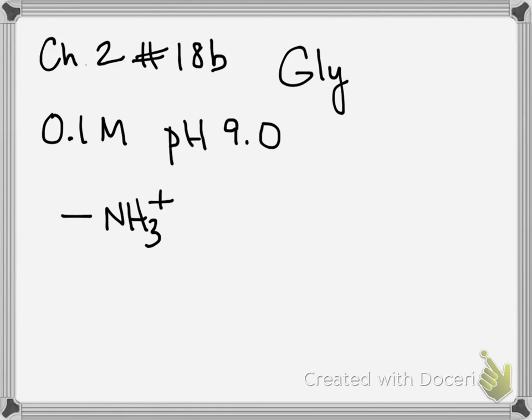So I always like to draw out the entire amino acid and just be aware of what I'm looking at. This question is really only focusing on this group from glycine. And you're told that the pKa is 9.6.